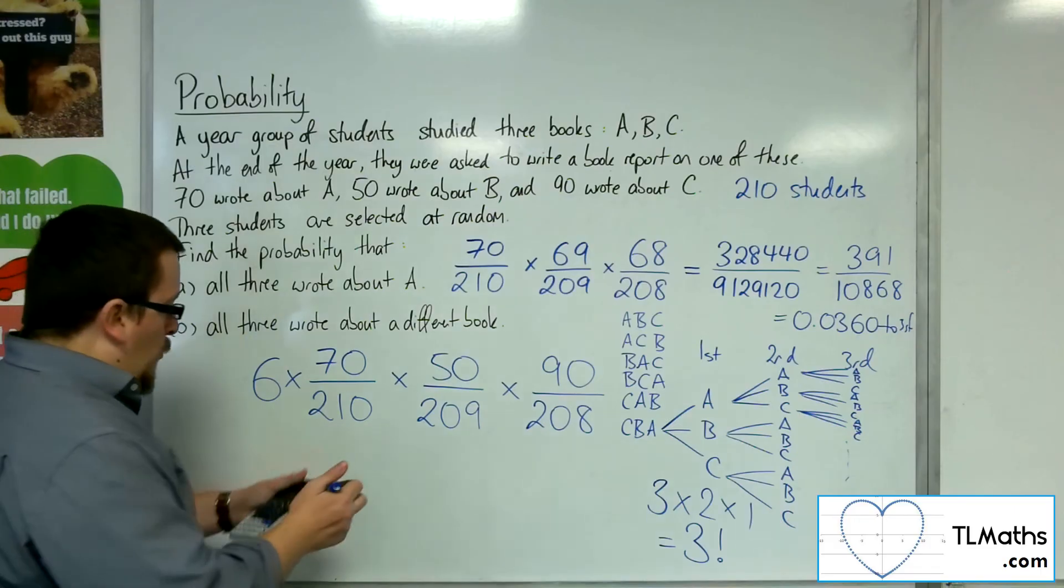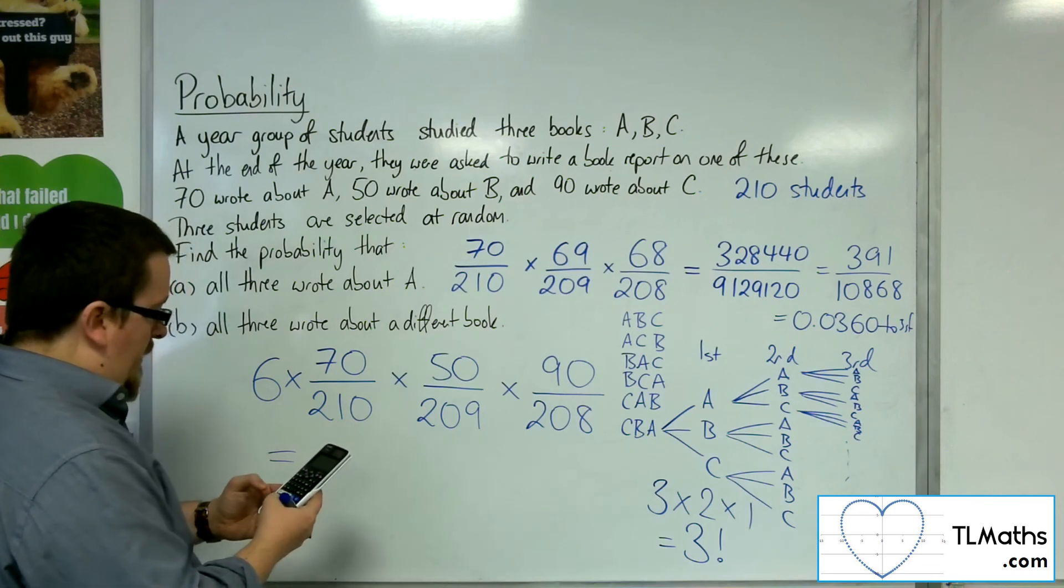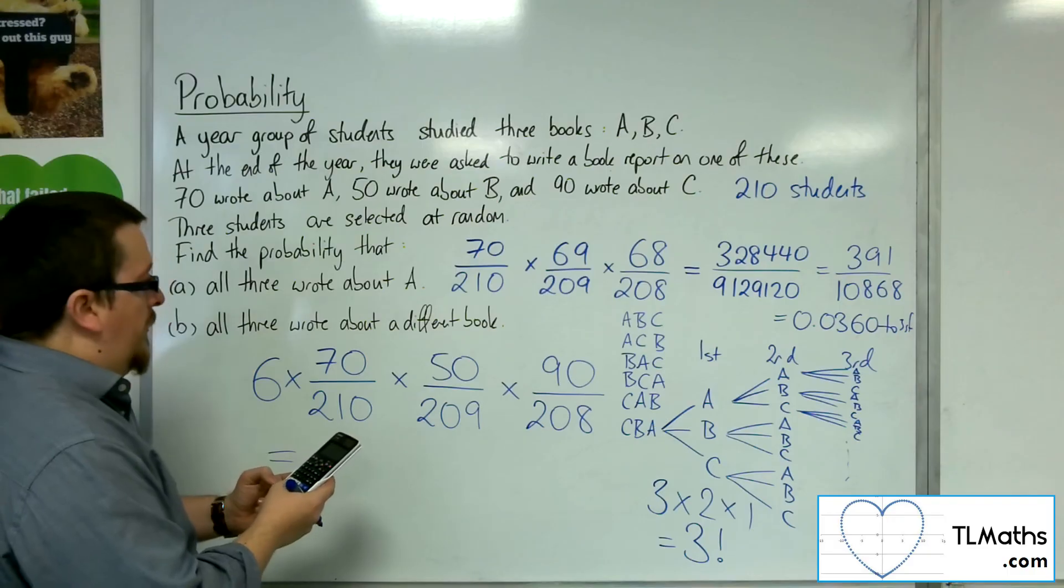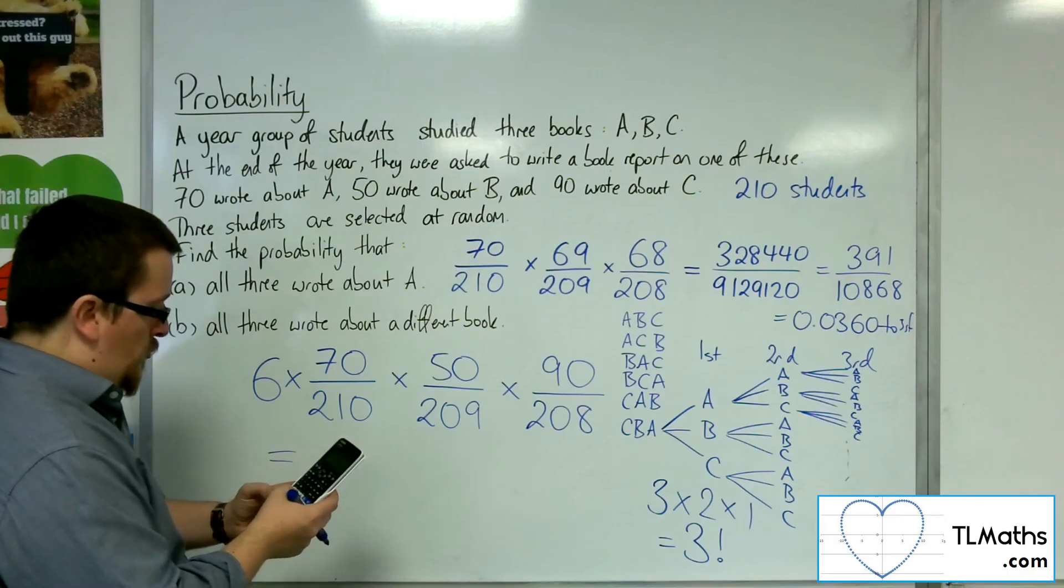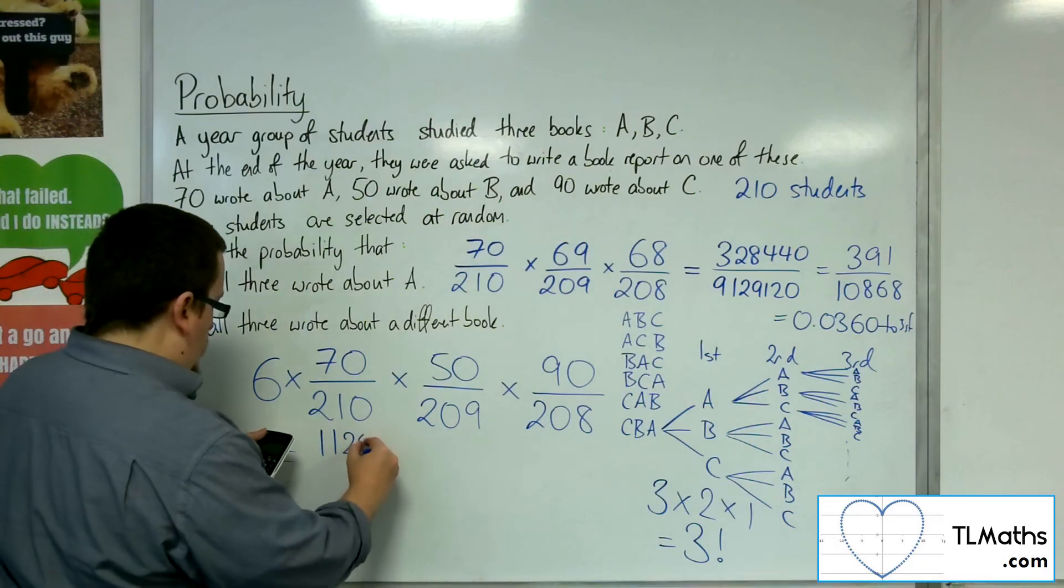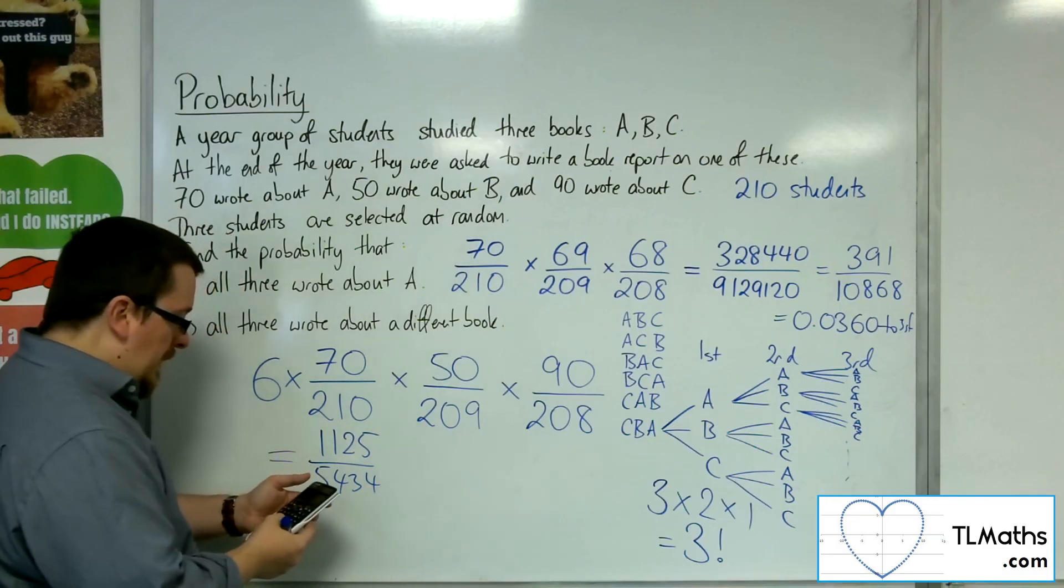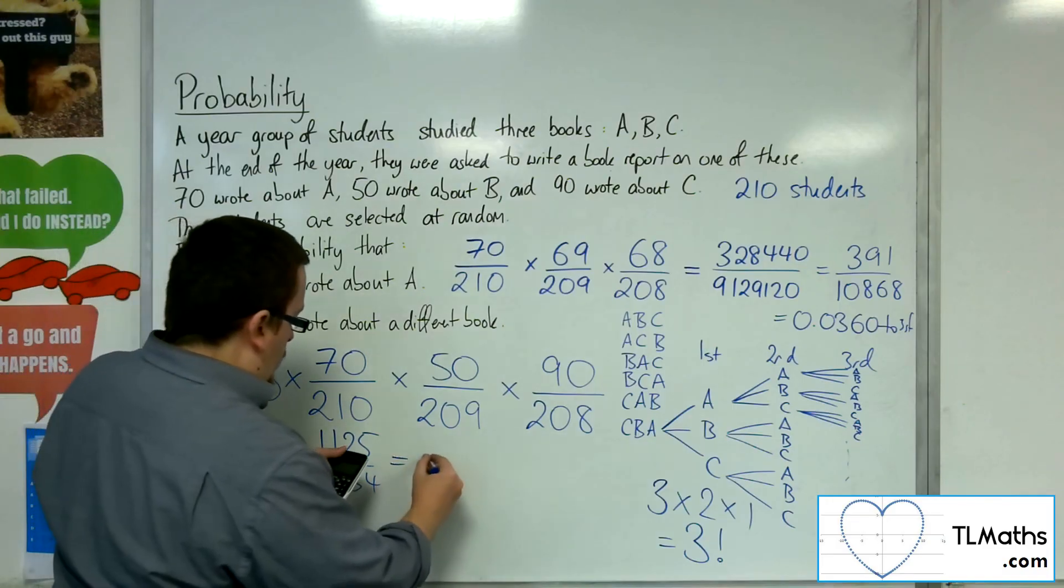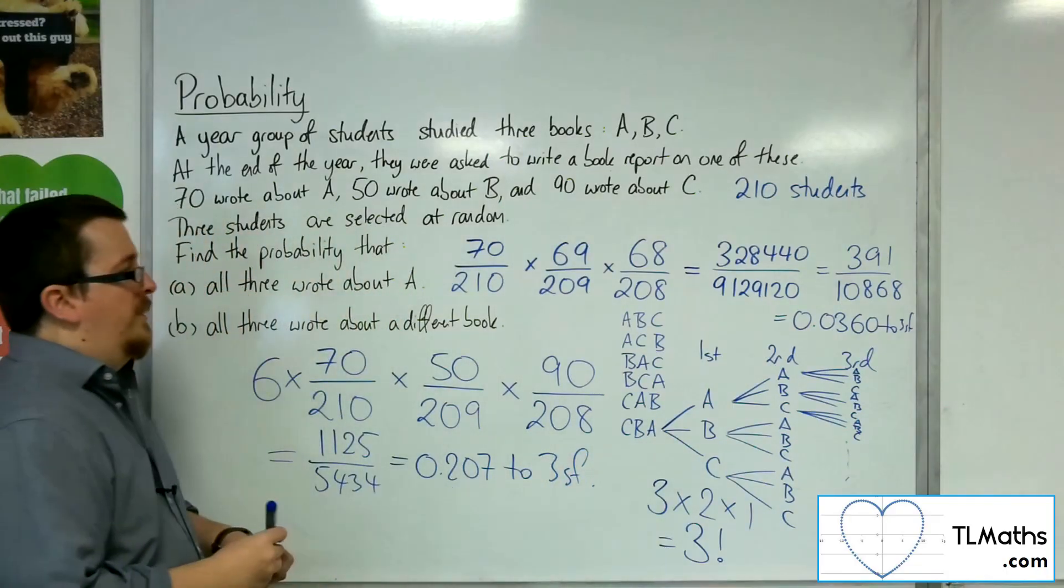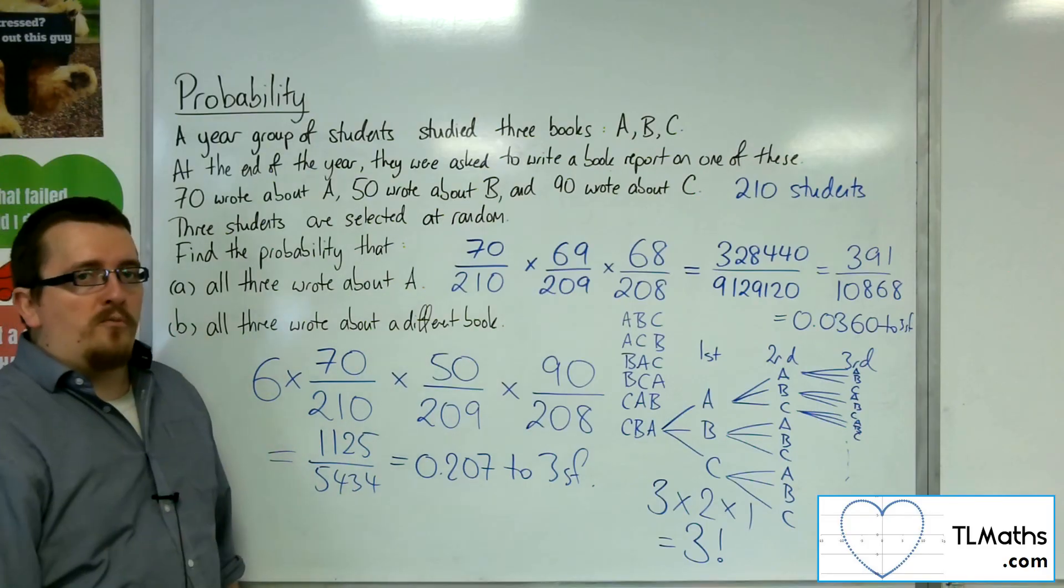What is the final result? We've got 70 over 210 times by 50 over 209 times by 90 over 208, and I've got to multiply that by six. That gets me 1,125 over 5,434, which is 0.207 to three significant figures. That's how we can deal with that type of problem.